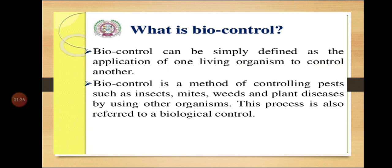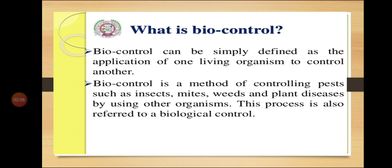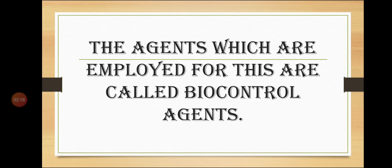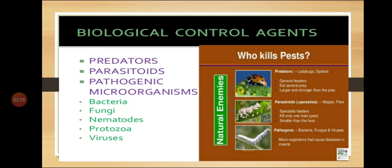Biocontrol can be simply defined as the application of one living organism to control another. It is a method of controlling pests such as insects, mites, weeds and plant diseases by using other organisms. It is the natural method of eliminating and controlling insects, pests and other disease-causing agents by using natural biological enemies. The agents employed for this are called biocontrol agents — organisms used for controlling diseases and pests.